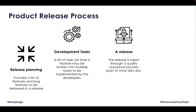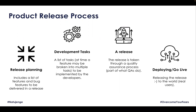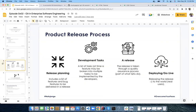Once QA is happy, sometimes we run user acceptance tests or UATs. Then we move to deployment or go live. We release the product to the real users. Because of the complexity of people working on different things, branches come to the rescue. In enterprise software development where we collaborate, we can never be working on the main branch or master branch directly.